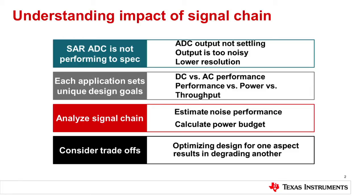Another example is in terms of analyzing the signal chain: estimating the noise performance, be it pertaining to voltage noise, current noise densities, peak-to-peak, etc., and calculation of the power budget. Each application sets a unique goal because it really depends on whether we're talking about DC precision or AC performance, such as speed.